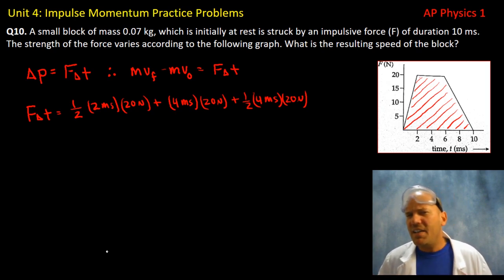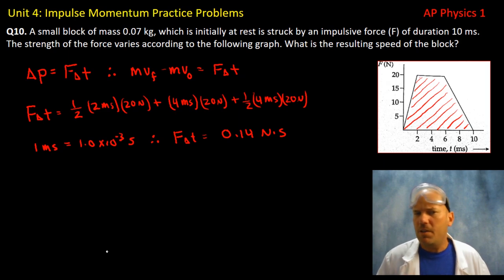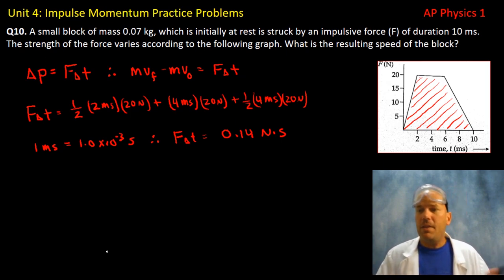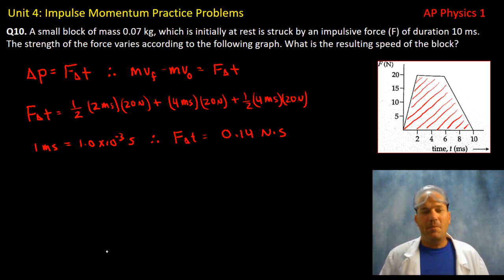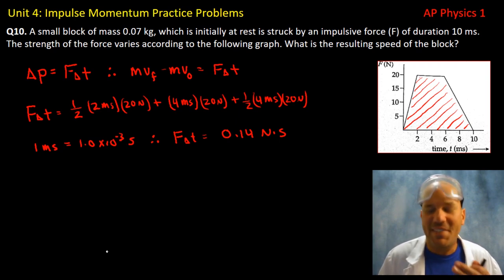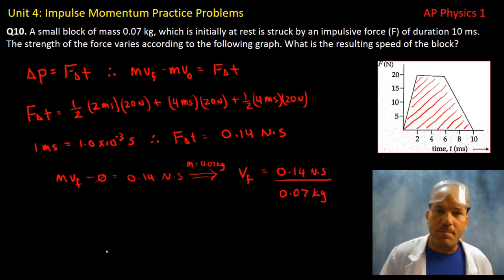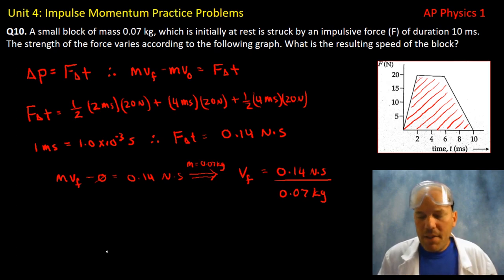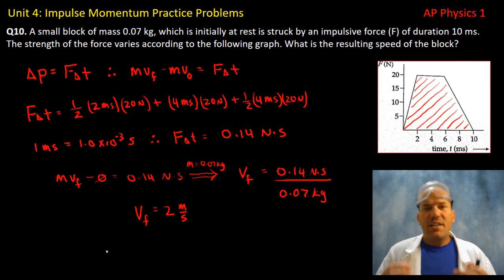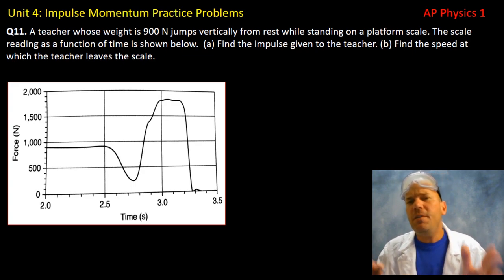The area under the graph — combining a triangle, rectangle, and triangle — gives the impulse. Don't forget to convert milliseconds: shift the decimal three places left to work in SI units. The impulse equals 0.14 newton-seconds. Setting that equal to change in momentum with zero initial velocity and dividing by the mass gives a final velocity of 2 meters per second.